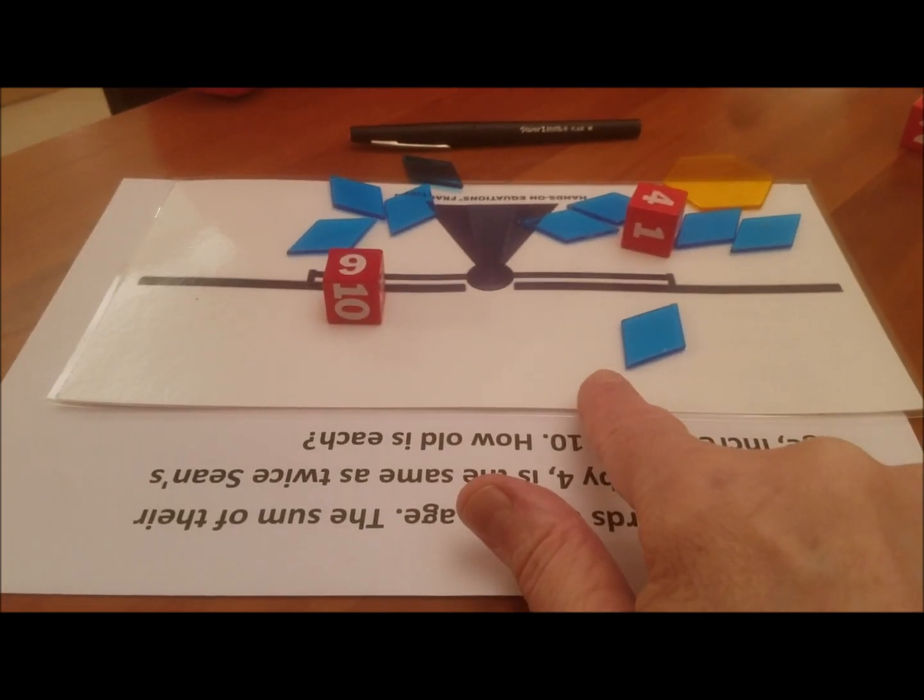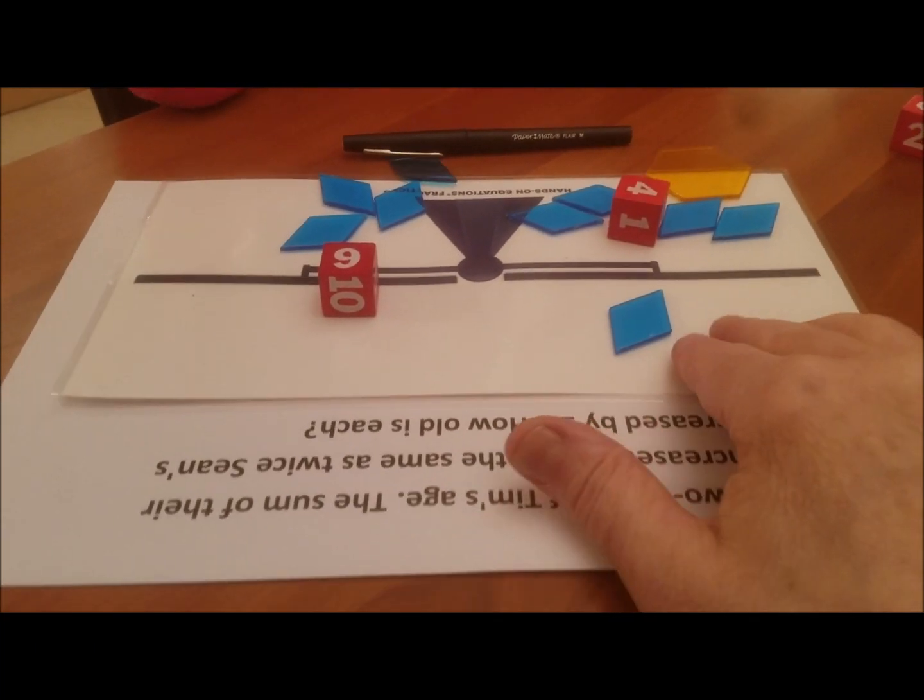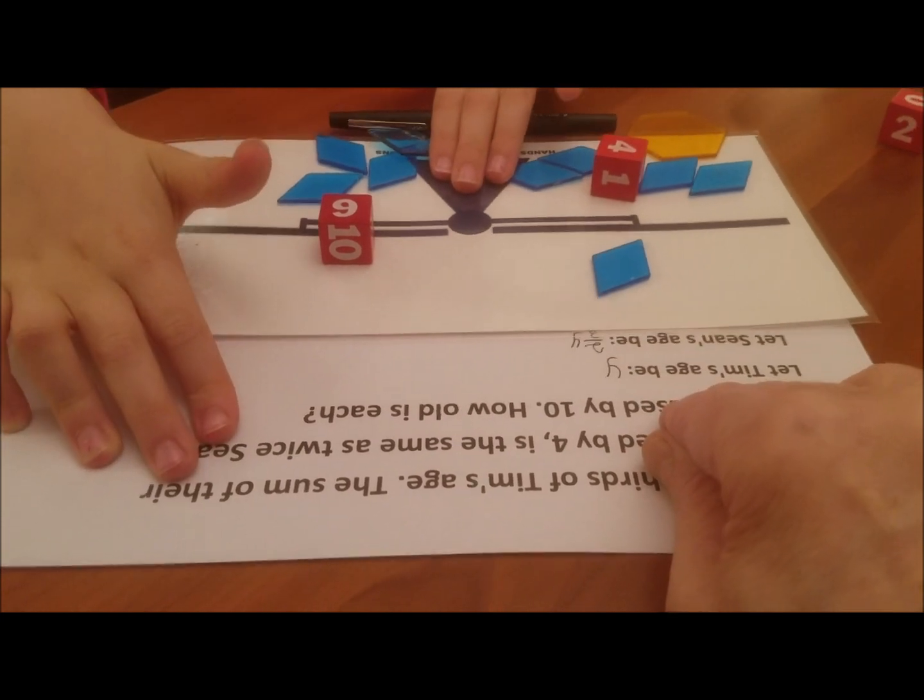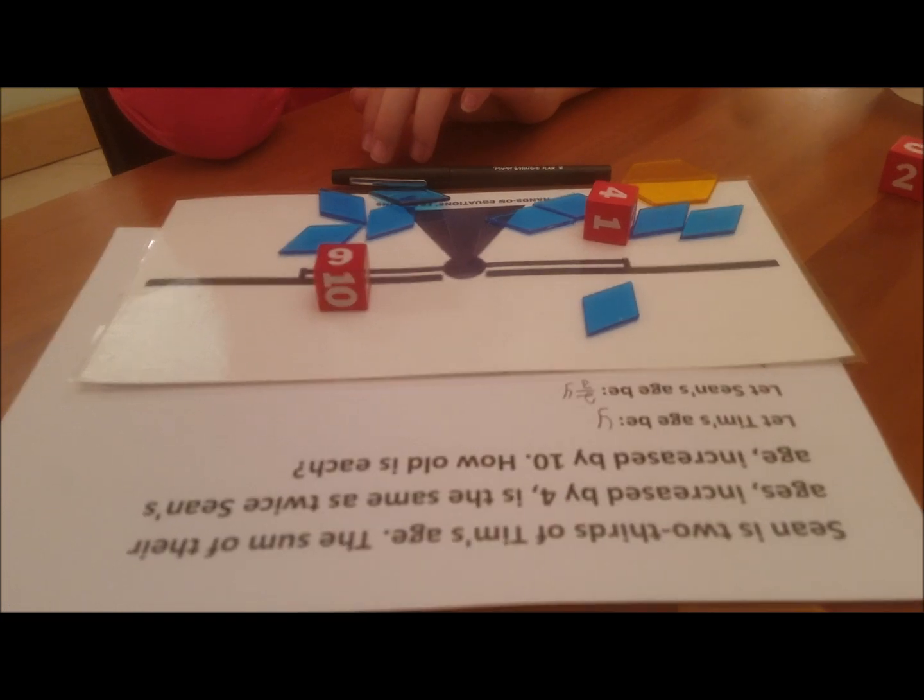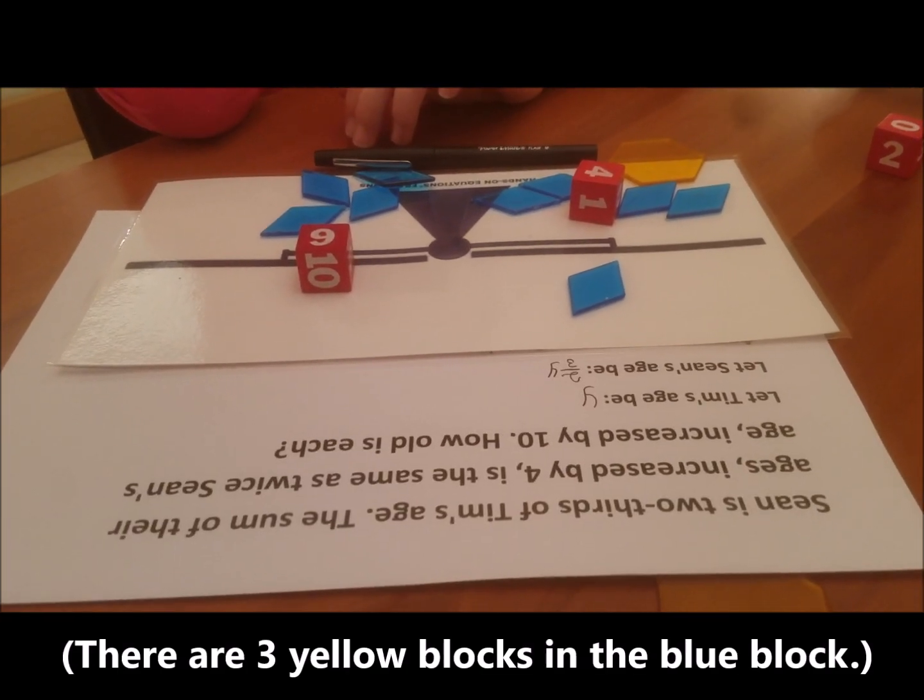So, how much is each blue block? Six. Now, if each blue block is six, what does that tell you about the yellow block? What would the yellow block be? Eighteen.